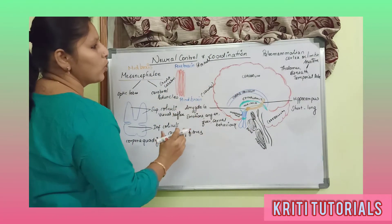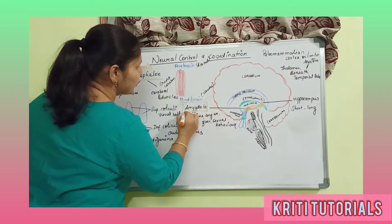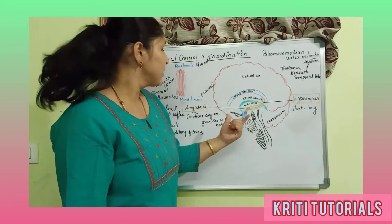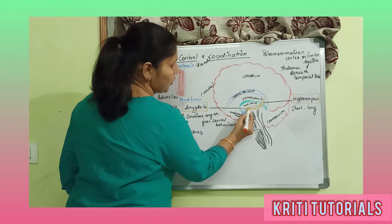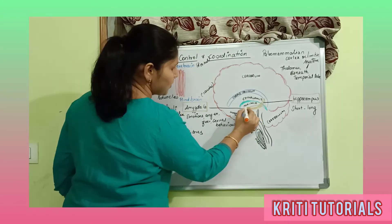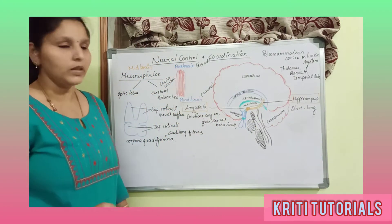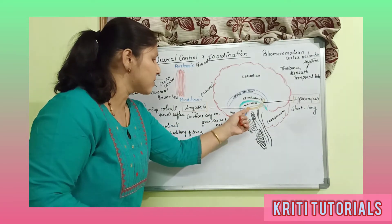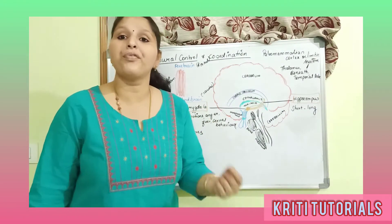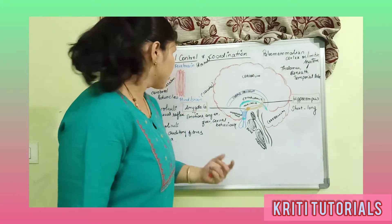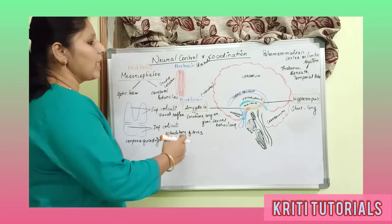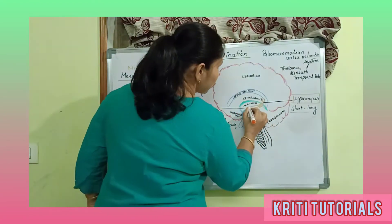The limbic system includes two major parts. The first part is seen in the thalamus as a spherical structure called the amygdala. The amygdala controls your emotions — your anger, your fear, and even sexual behavior and arousal.